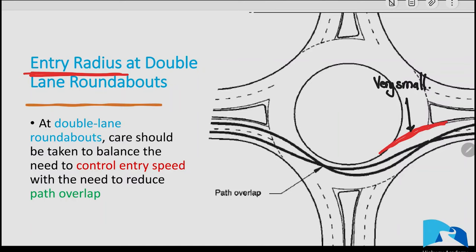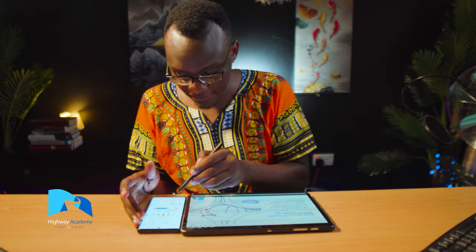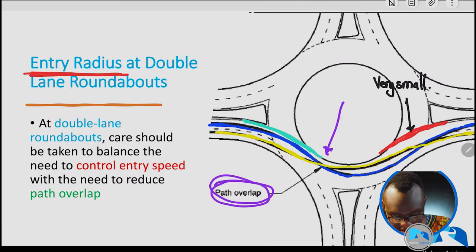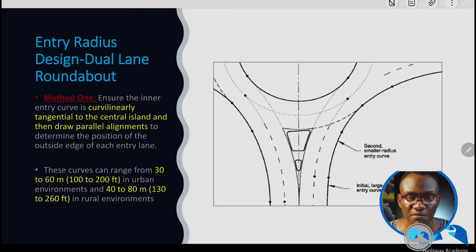The inner vehicle, as a result of the smaller radius, is going to try and come into the outward lane and then go back to its initial lane, while the vehicle in the inward lane will make a tight maneuver. What ends up happening is you have something we call a path overlap. So when designing double lane roundabouts, it's very important to ensure your entry, exit, and circulatory curves are perfectly designed to avoid this path overlap.